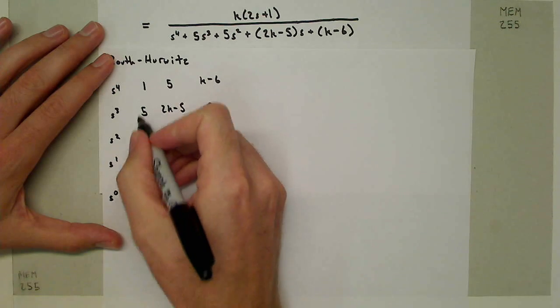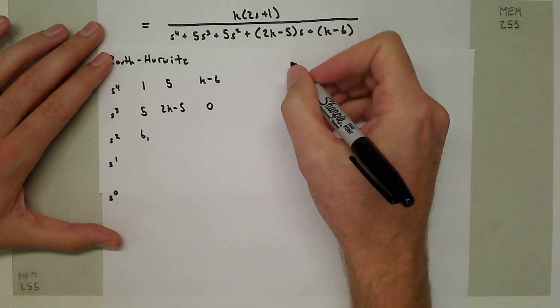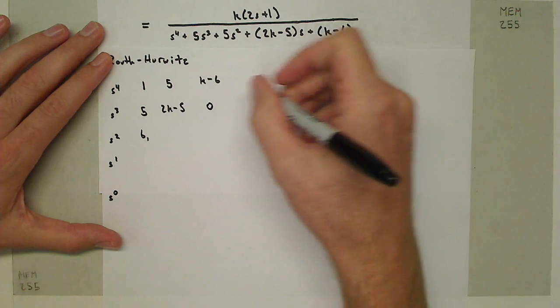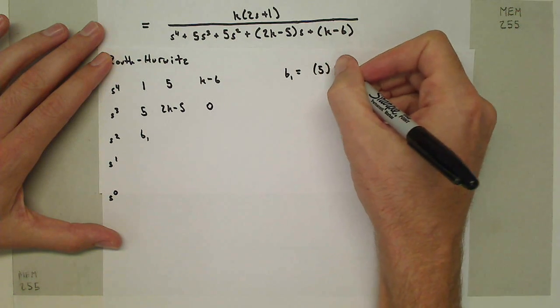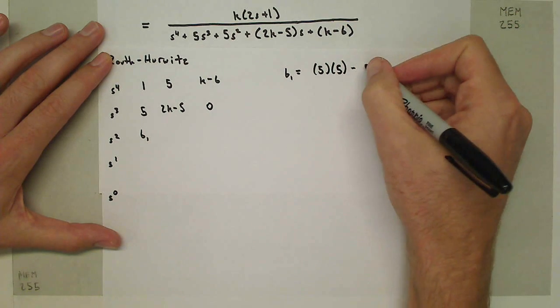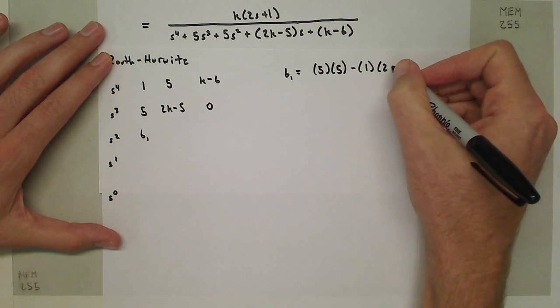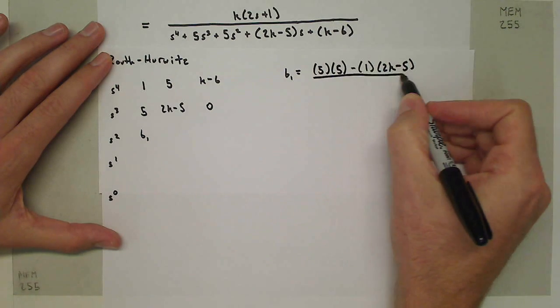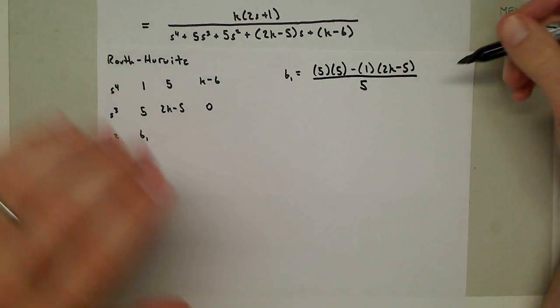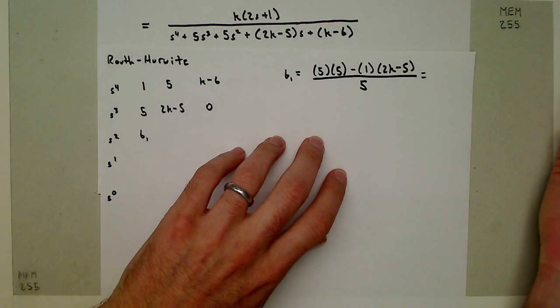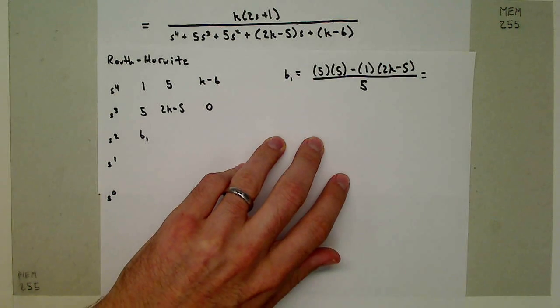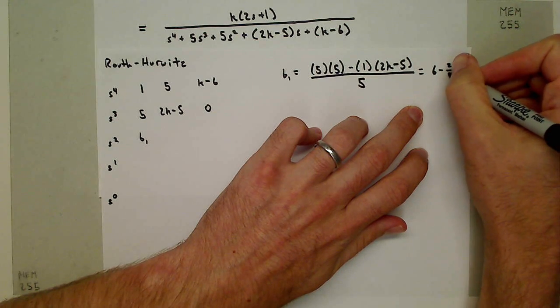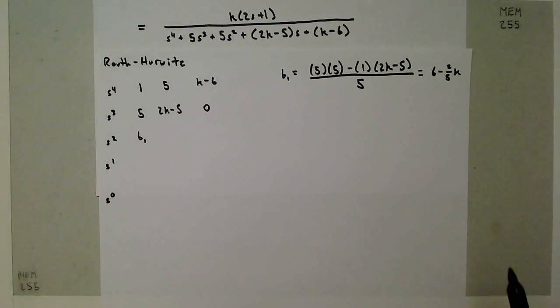In this case, that term which I'll call B1 is simply going to be equal to this times this minus this times this, the minus of that, so it's actually going to be 5 times 5 minus 1 times (2K-5), and that's all going to be divided by this term, the A3 term, 5. The algebra simplifies nicely, and that ends up being just 6 - 2/5 K.